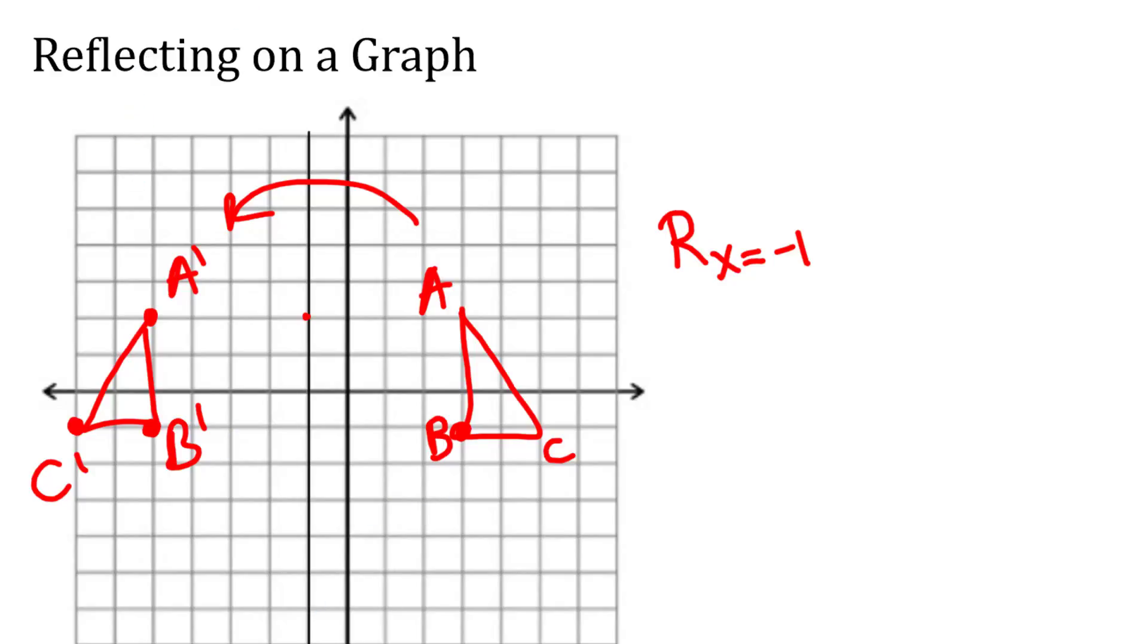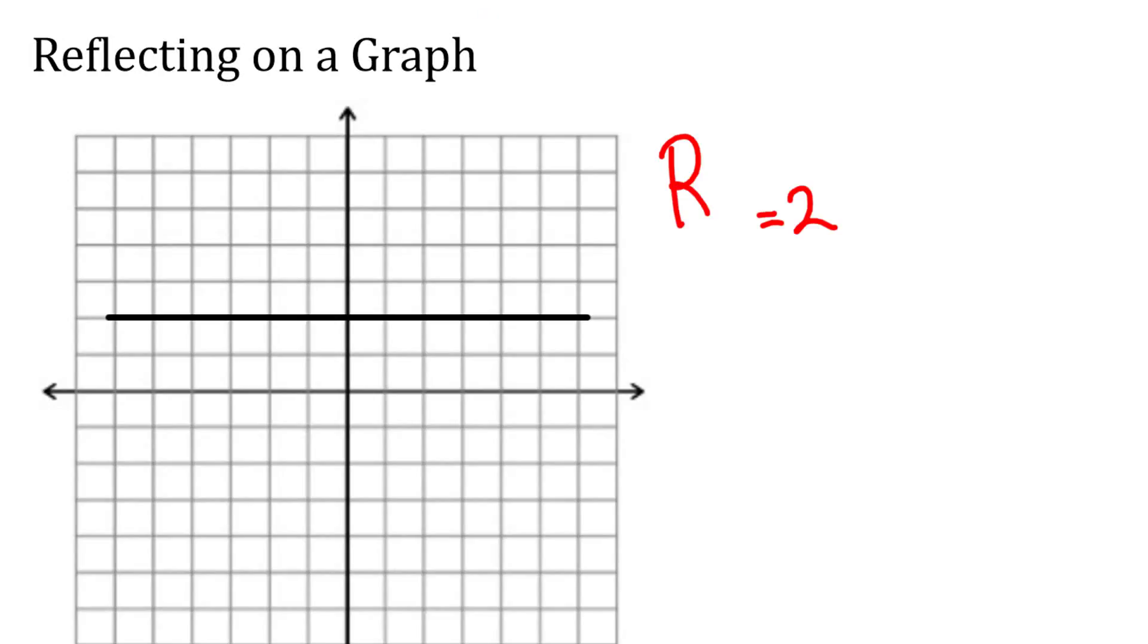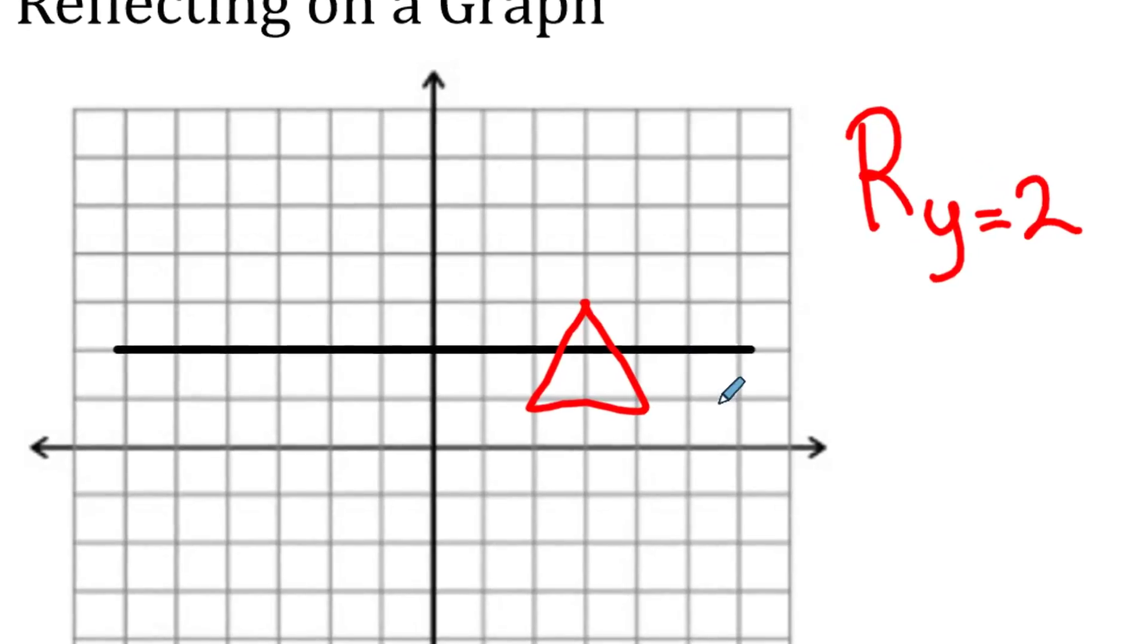Now, let me do one more just so you got the idea. So we got y equals 2. It's going to be right on this line here. And then let's make our shape like this. I'm going to switch to a different color. So if our point's right here and we're reflecting it over this line,